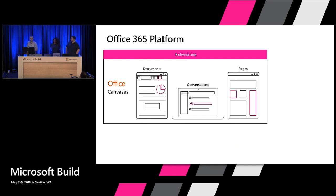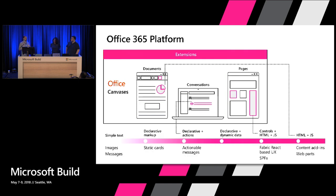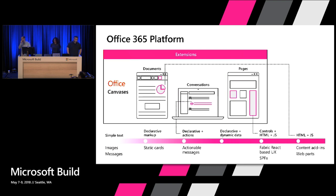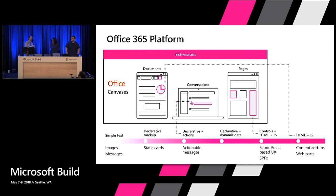The last piece is custom content — within these canvases, integrating a type of content we don't necessarily understand. Inside Teams, you could have a poll through actionable messages and simple declarative markup. If you want a custom visualization inside Word or Excel, you can use specific HTML and JavaScript to manage every control on the page. So the three pieces are: the Graph and data underlying both our applications and yours; the ability to extend our canvases with new behaviors; and the ability to embed custom content inside Office canvases.